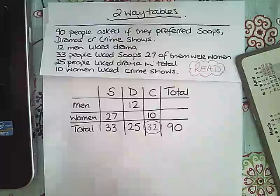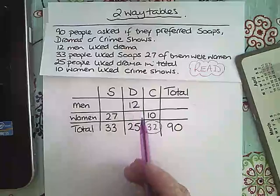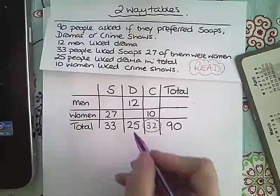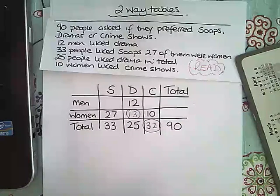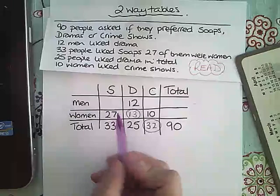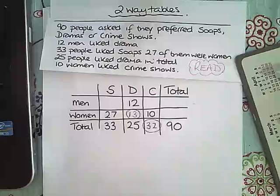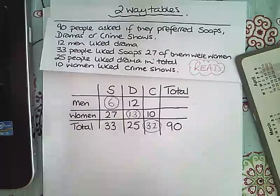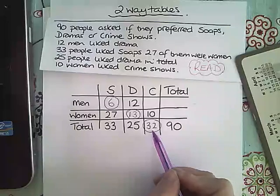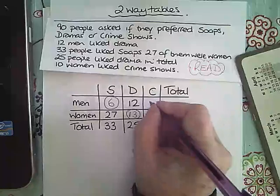For drama, I've got 12 men liking drama out of a total of 25, so 25 take away 12 is 13 women liked drama. For soaps, 33 people liked soaps and 27 of them were women, so 33 take away 27 tells me that 6 men liked soaps. For crime, there's a total of 32 who liked crime shows and 10 of them were women, which means 22 of them were men — 32 take away 10 is 22.